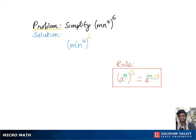Here in our problem we have m raised to the first power times n raised to the fourth power, and the whole group raised to the sixth power. So to simplify this, we keep the base m and multiply the exponents, which is 1 times 6.